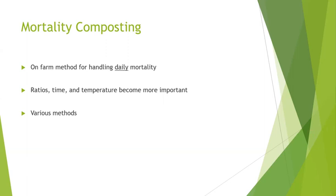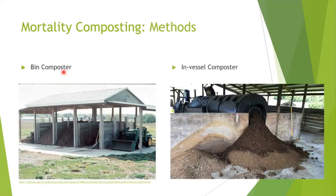The composting process includes high-density materials like meat, hide, feathers, and bones — all of which carry an increased risk of containing pathogens. When doing these higher-risk types of composting, you want to be extra careful about managing your ratios, your time, and regularly recording your temperatures. For mortality composting, the two most popular methods are bin compost systems and in-vessel systems.